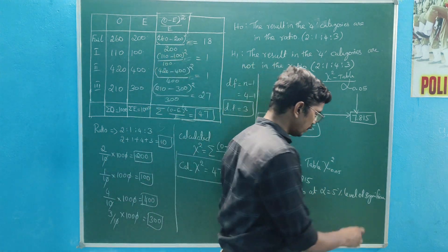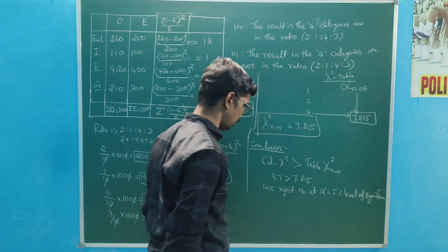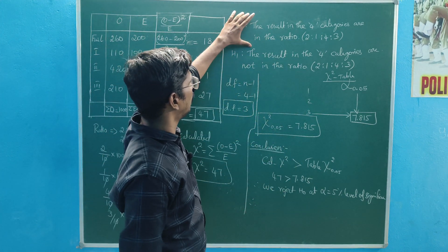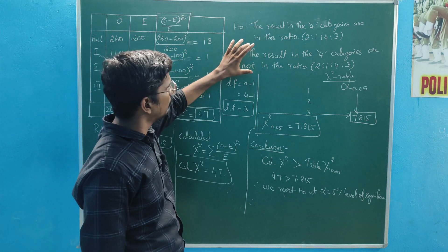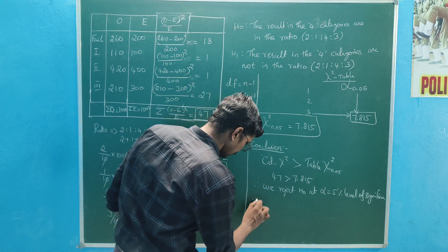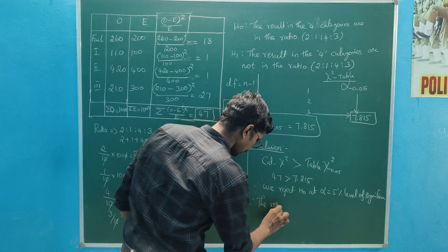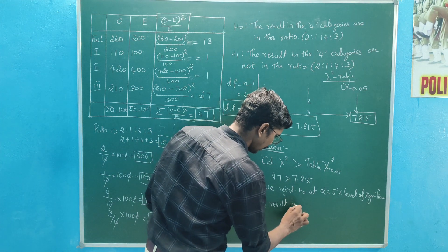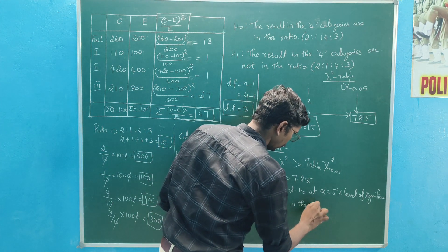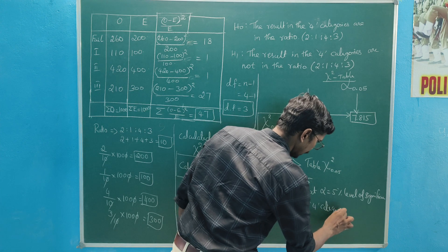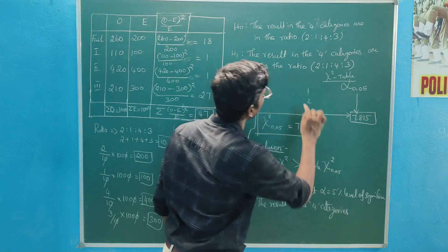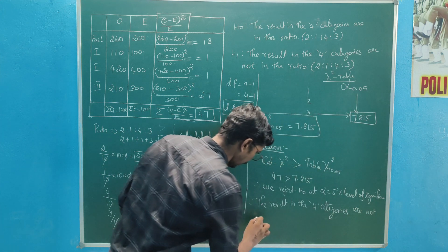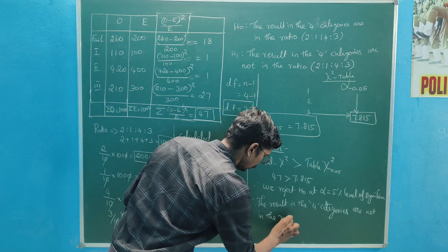At 5% level of significance, after H0 is rejected, what is the result? The result is that the four categories are not in the ratio.